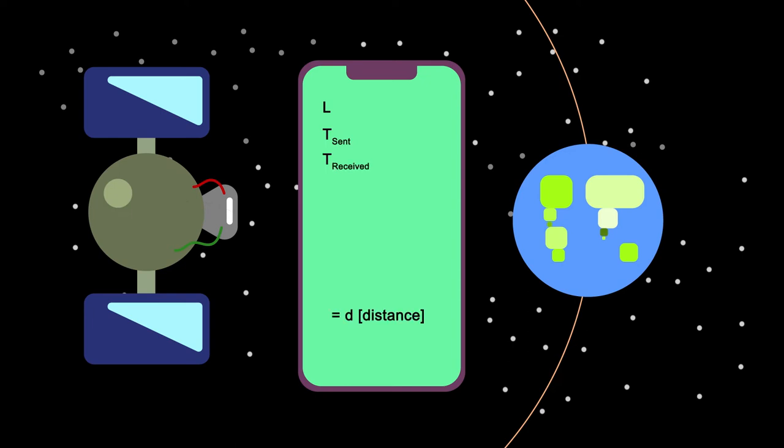To find out how far you are from the satellite, your phone subtracts the time the satellite transmitted the signal from the time it received the signal, and multiplies by the speed of the radio wave, which is the speed of light.